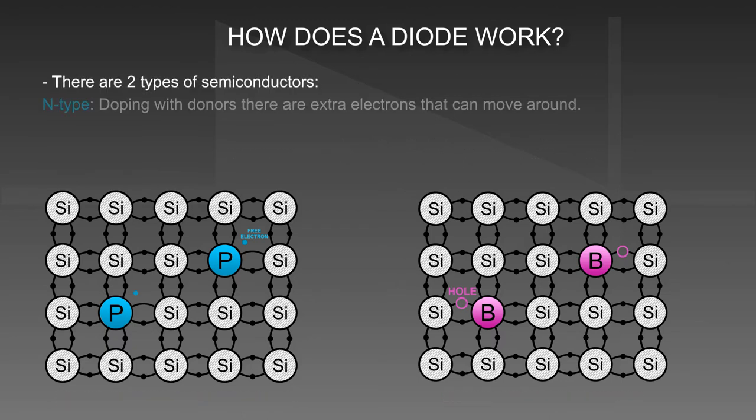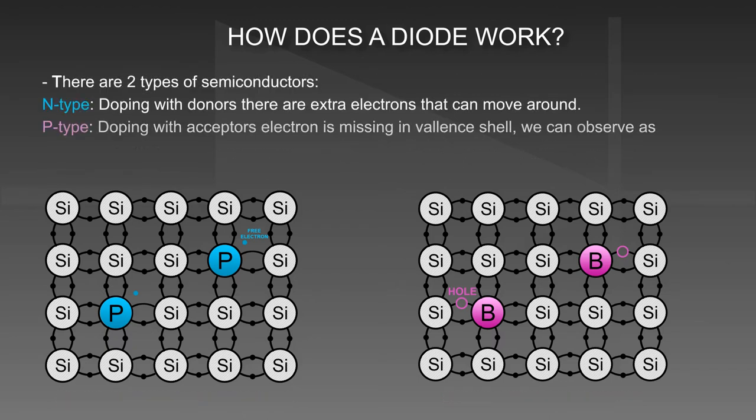There are two types of semiconductors. N-type: doping with donors creates extra electrons that can move around. P-type: doping with acceptors means an electron is missing in the valence shell, which we can observe as a positively charged hole.